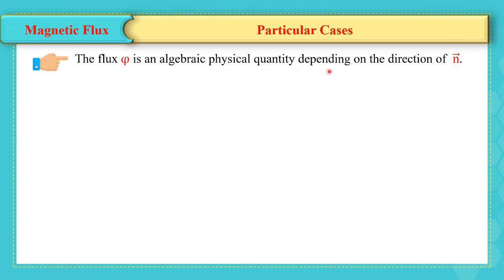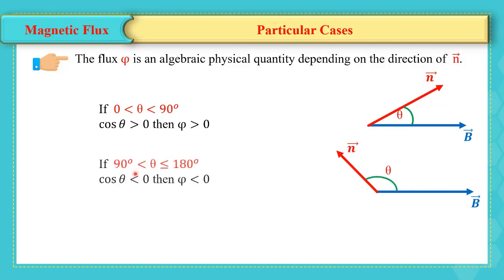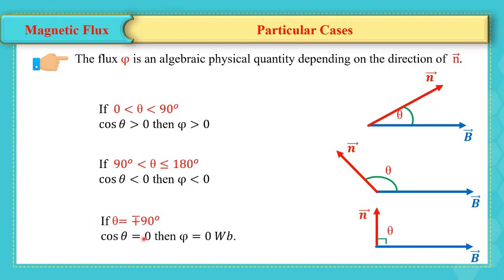Note that flux is an algebraic physical quantity depending on the direction of n̂. If the angle between n̂ and B is between 0° and 90°, cosine θ is positive and flux is positive. If the angle is between 90° and 180°, cosine θ is negative and flux is negative. If the angle is exactly 90°, cosine θ equals zero and the flux is equal to zero.